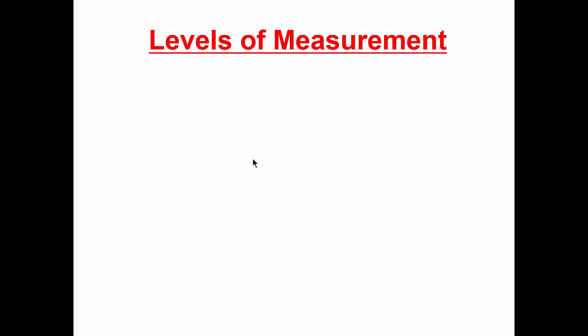Let's move from operational definition to our final topic for today, which is levels of measurement. And we're going to introduce four different levels of measurement. The first of which is the nominal scale, also called the categorical scale, and this is the least precise of the four different scales that we'll be looking at.